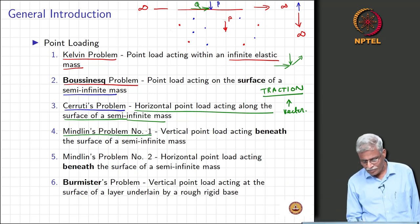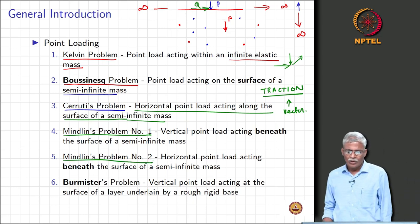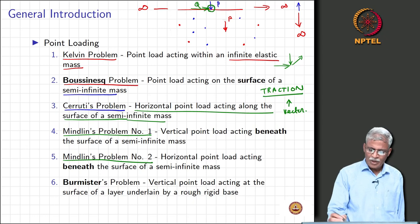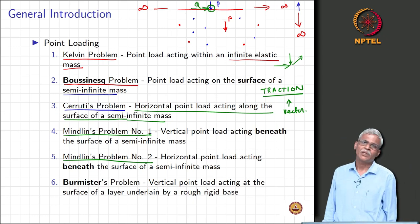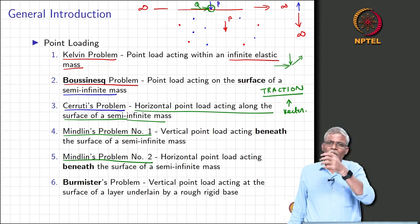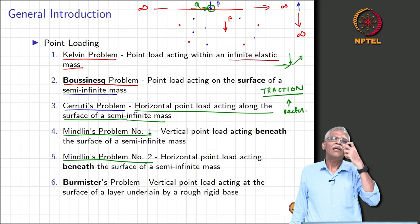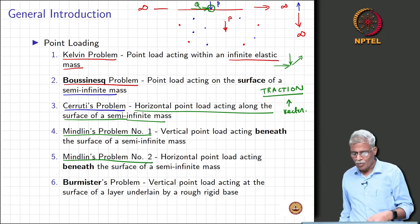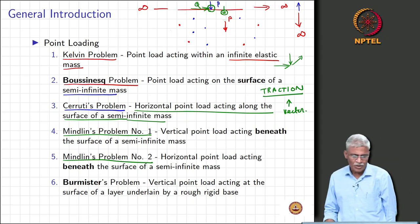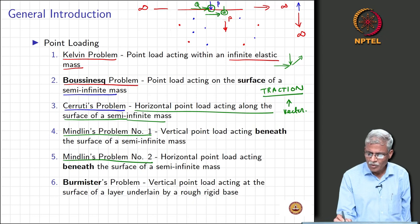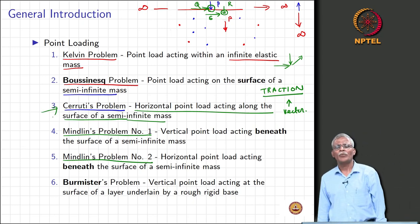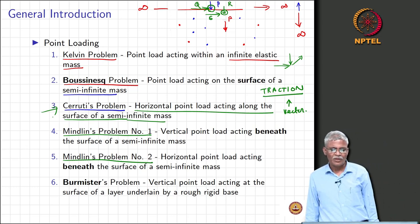Then come Mindlin's problem 1 and problem 2. In problem 1, a vertical point load acts beneath the surface. One major issue with Boussinesq's equation is the boundary condition at the point directly below the point load — the stress becomes an indeterminate quantity. So Mindlin addressed the load applied beneath the surface. He also solved a problem similar to Cerruti's: a horizontal point load acting beneath the surface of a semi-infinite mass.